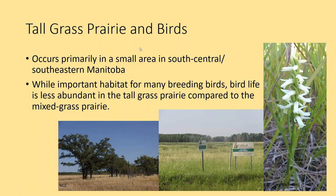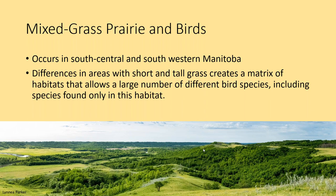We'll be talking about both types of prairie today. Tallgrass prairie occurs primarily in a small area in south-central or southeastern Manitoba. While it's important habitat for many breeding birds, bird life is less abundant there compared to mixed grass prairie. Mixed grass prairie occurs in south-central and southwestern Manitoba. What makes it such key habitat is the differences in areas with short and tall grass, creating a matrix that allows a large number of different bird species to survive there, including species found only in this habitat.